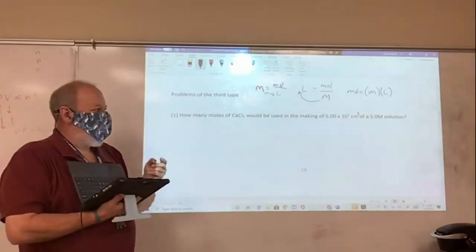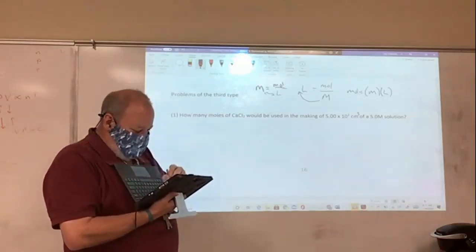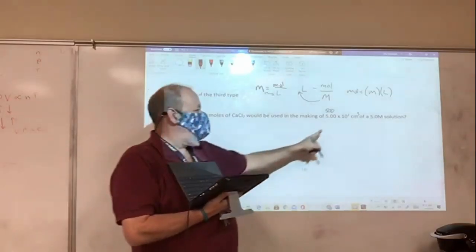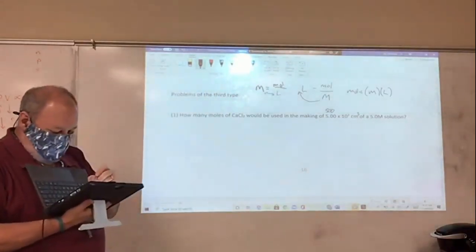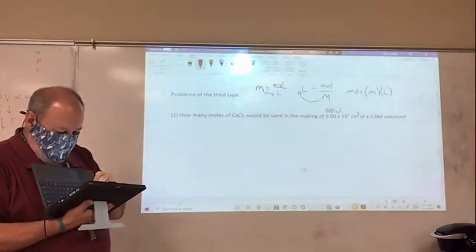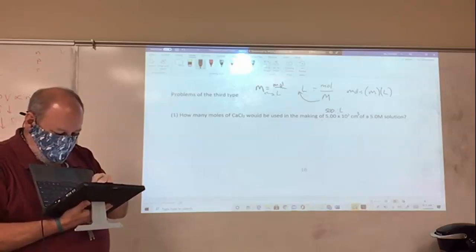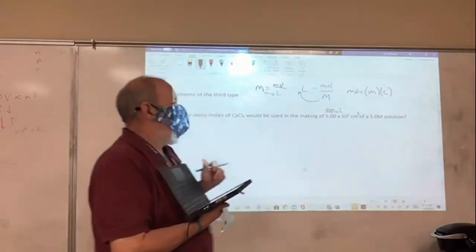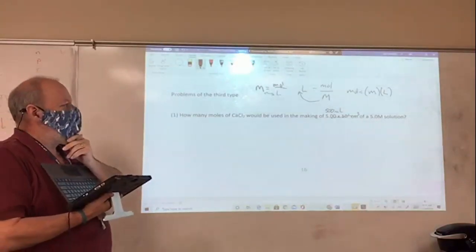A hundred. So five times 10 to the second is 500. Just so I wouldn't be confused as I was trying to work this problem, I might write up here 500 instead of this. And then cubic centimeters, remember, are the same thing as milliliters. I'm going to say 500 milliliters because that means more to me than five times 10 to the second cubic centimeters. I might even cross that out just to make sure I see that.